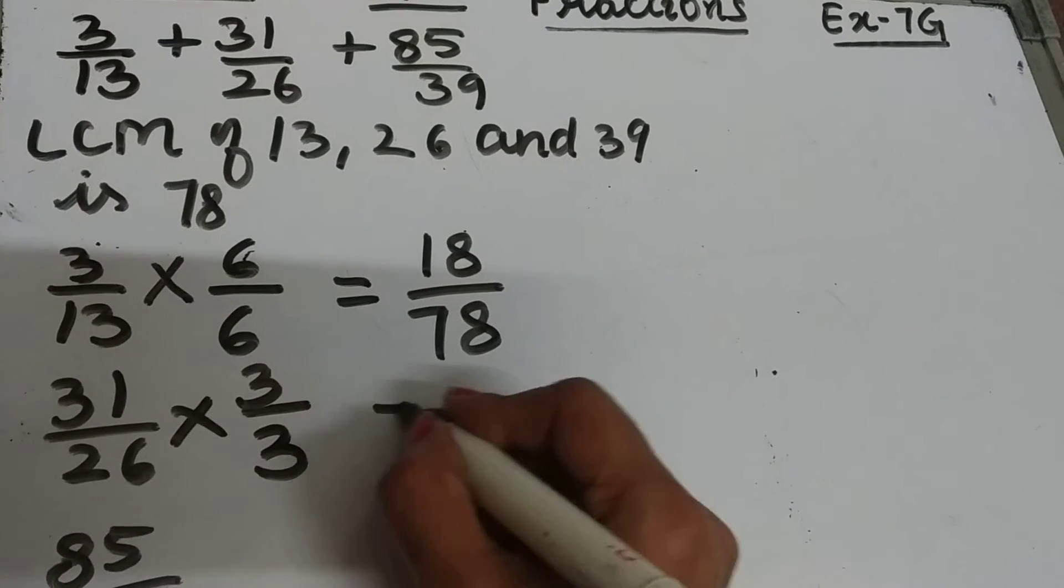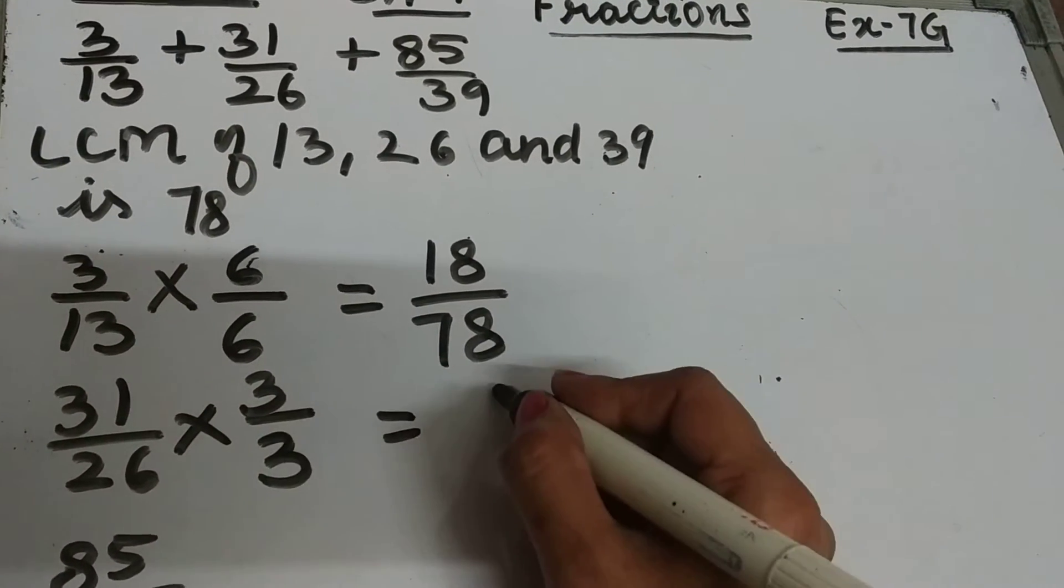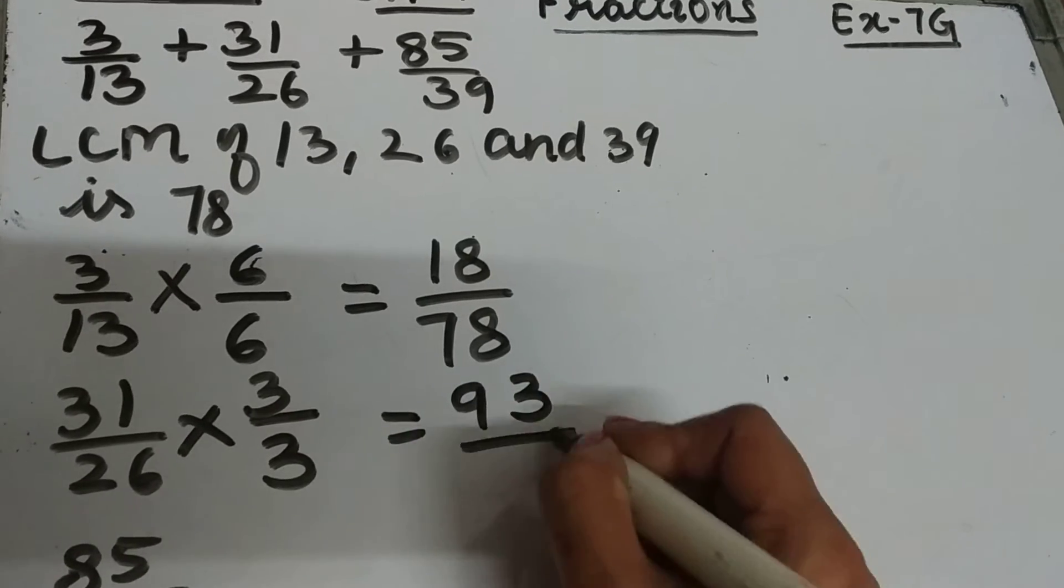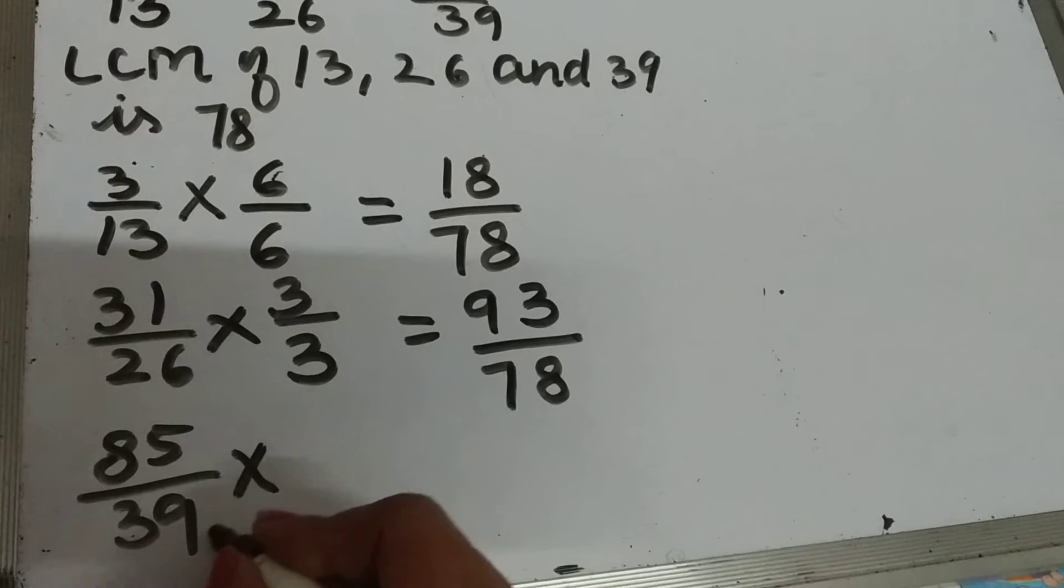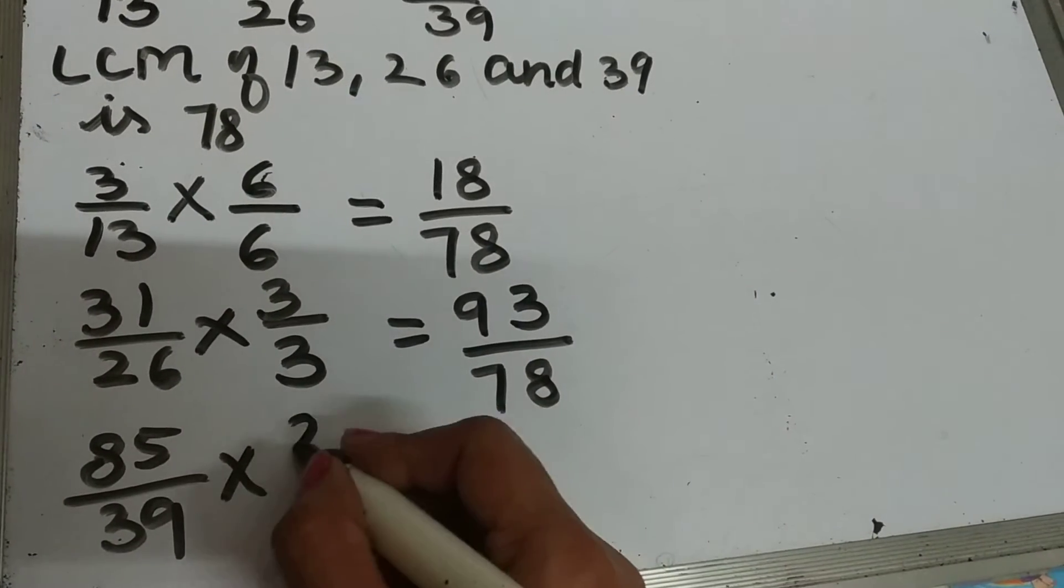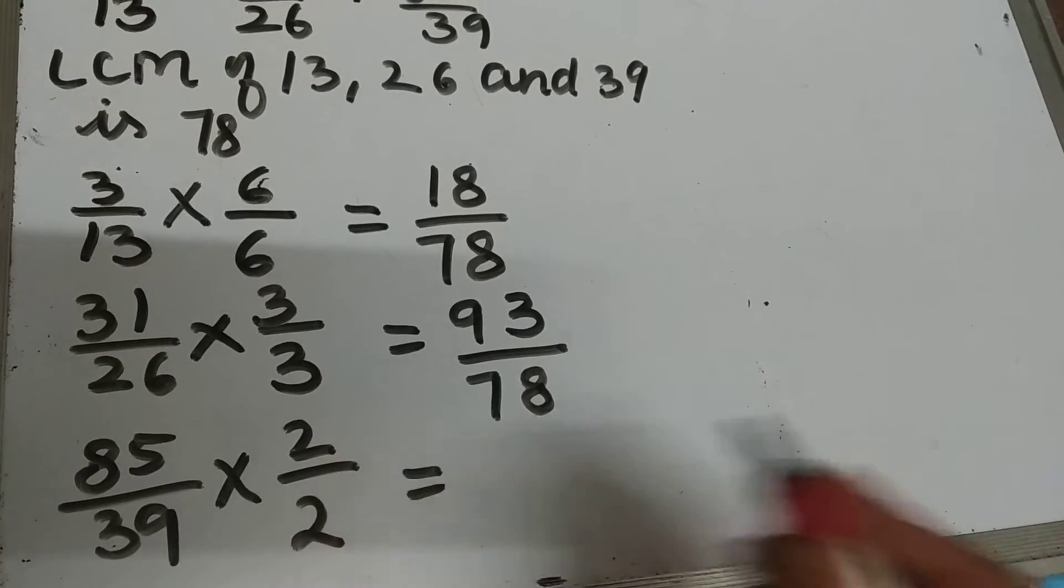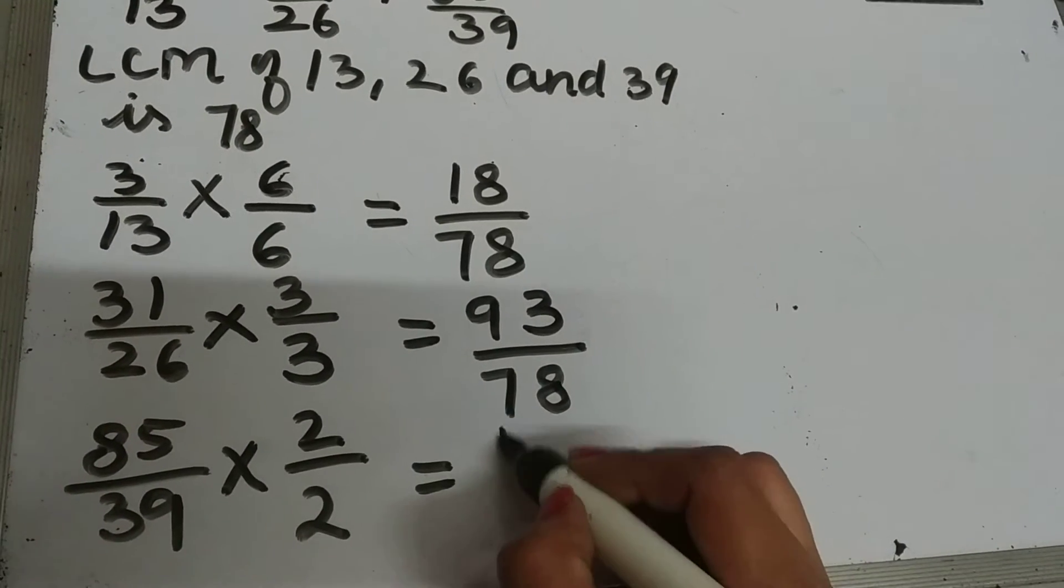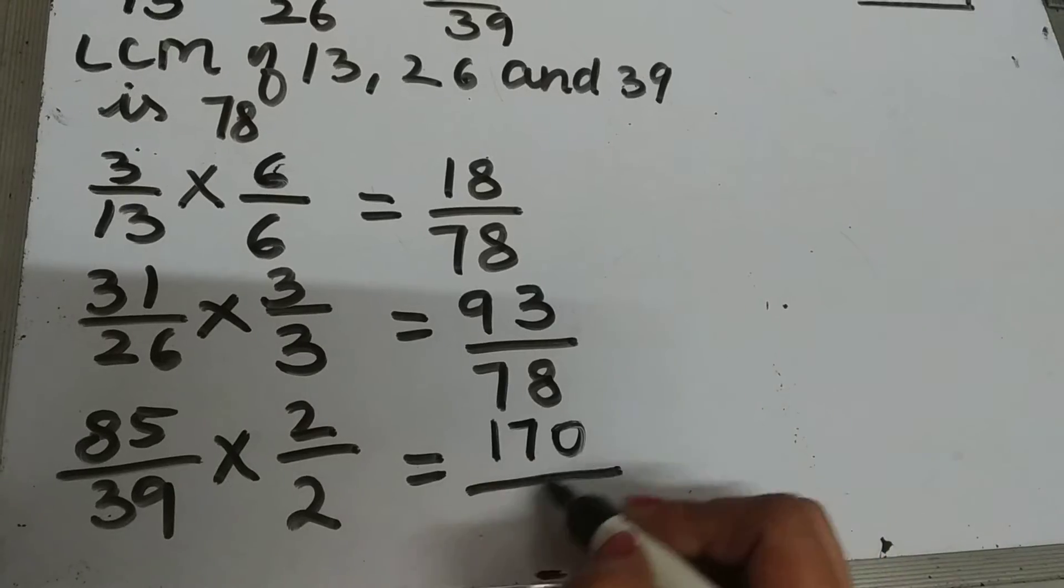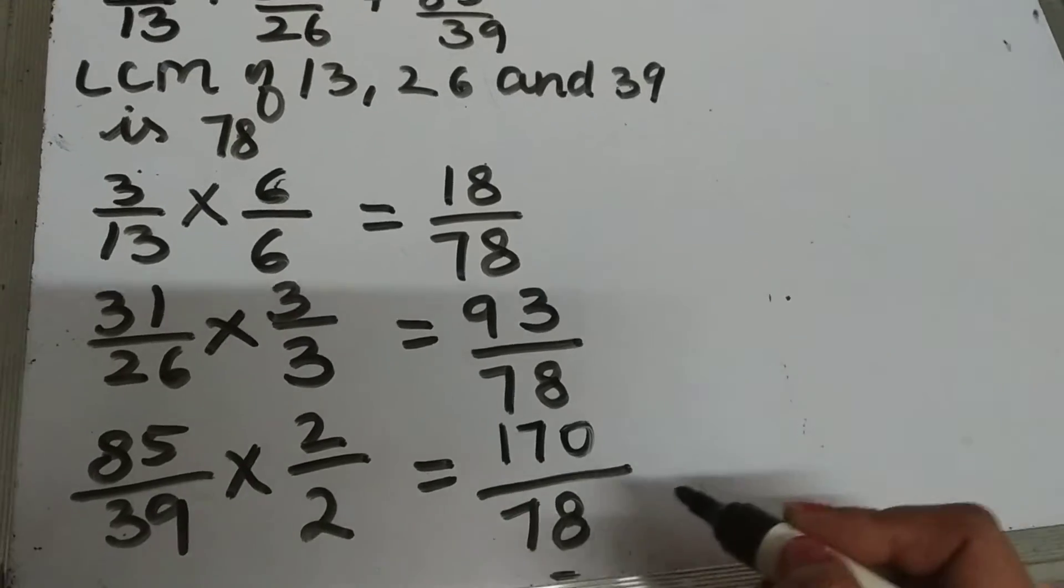For 31 upon 26, we multiply numerator and denominator by 3. 31 times 3 is 93 upon 78. And for 85 upon 39, since 39 times 2 is 78, we multiply the numerator and denominator by 2. 85 times 2 is 170 upon 78.